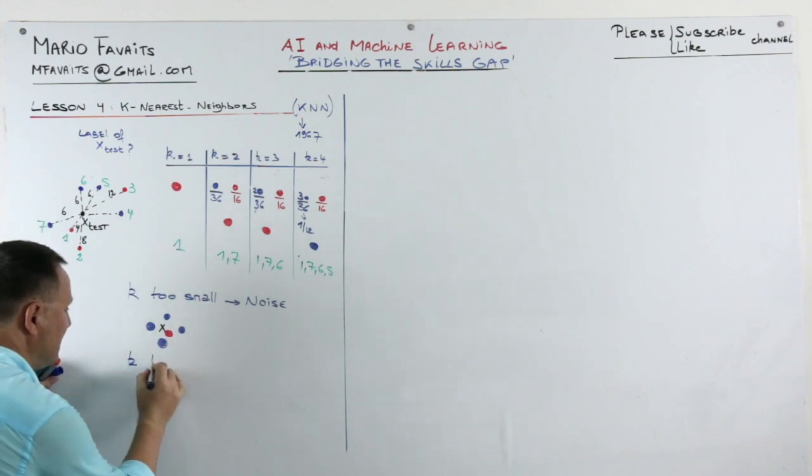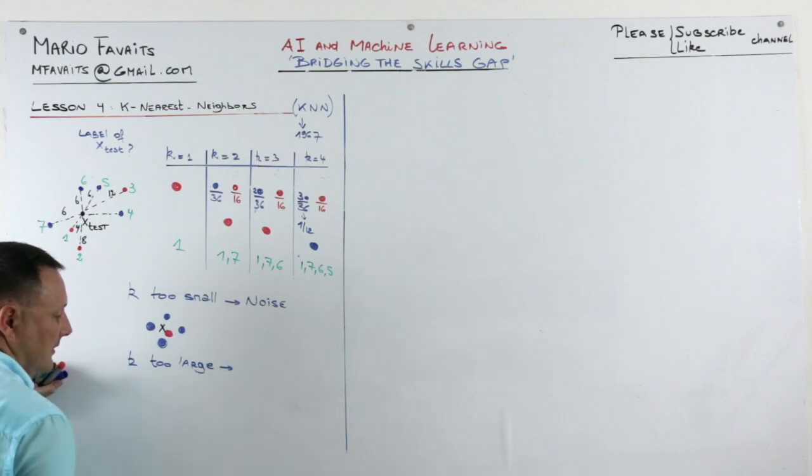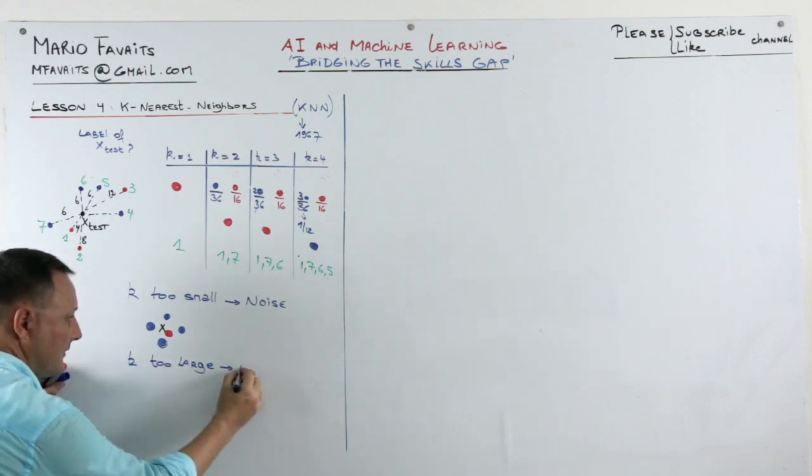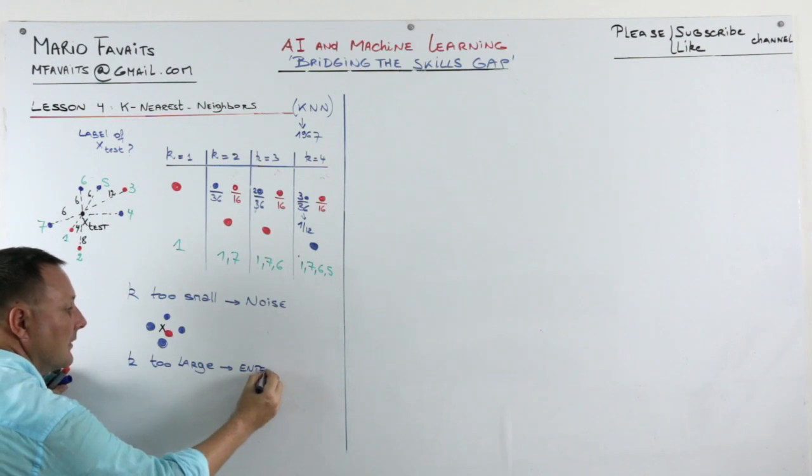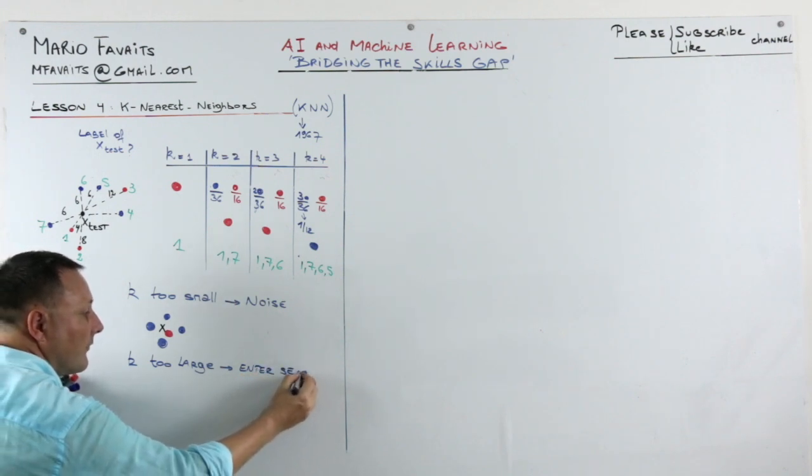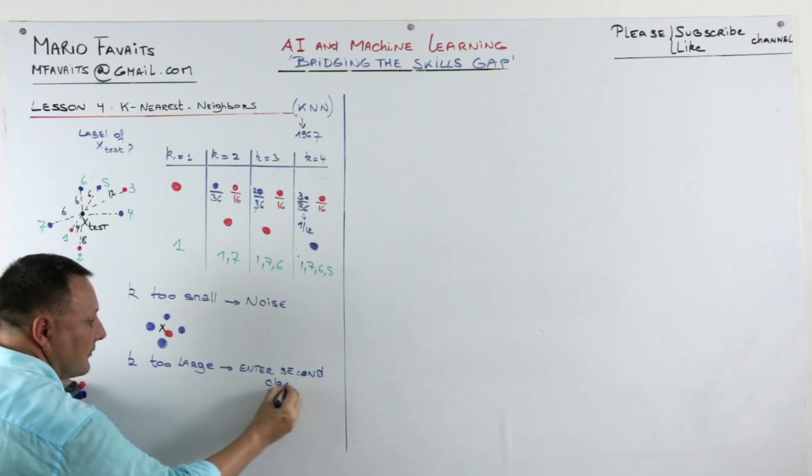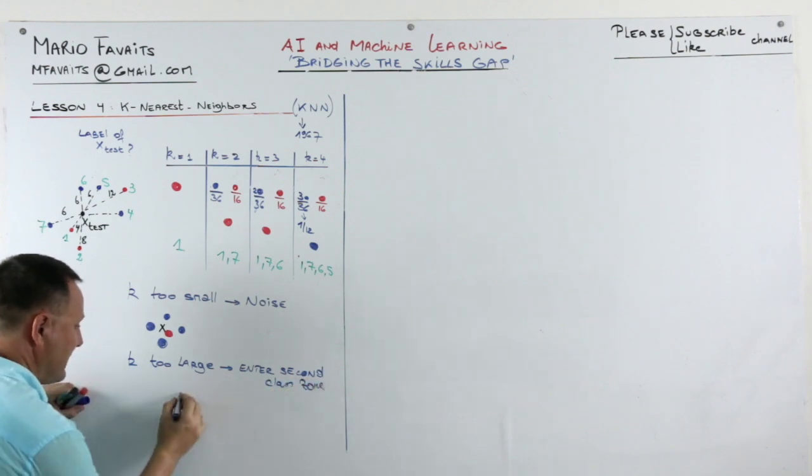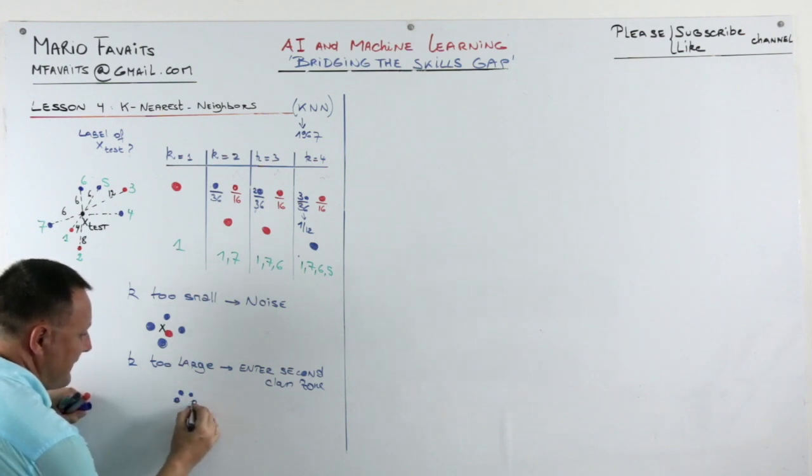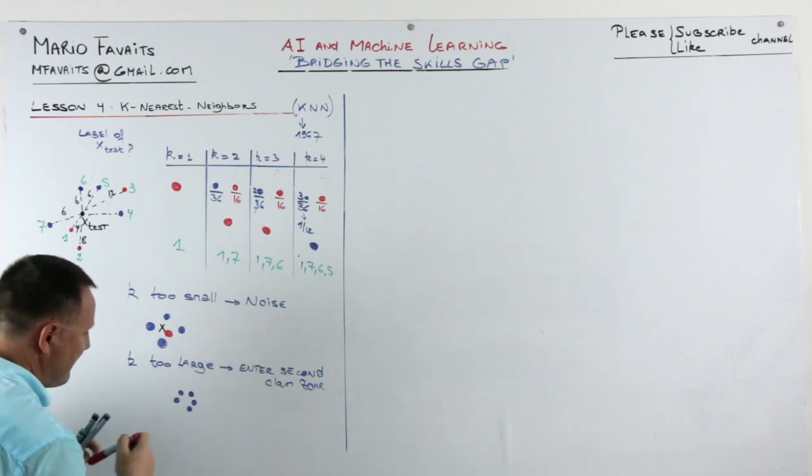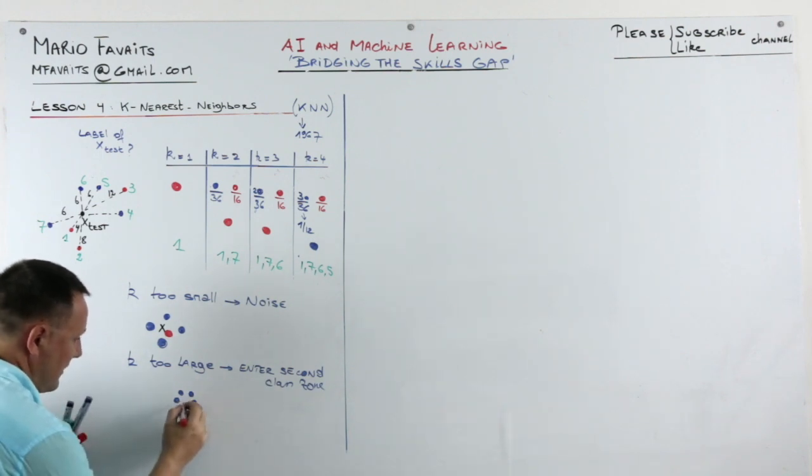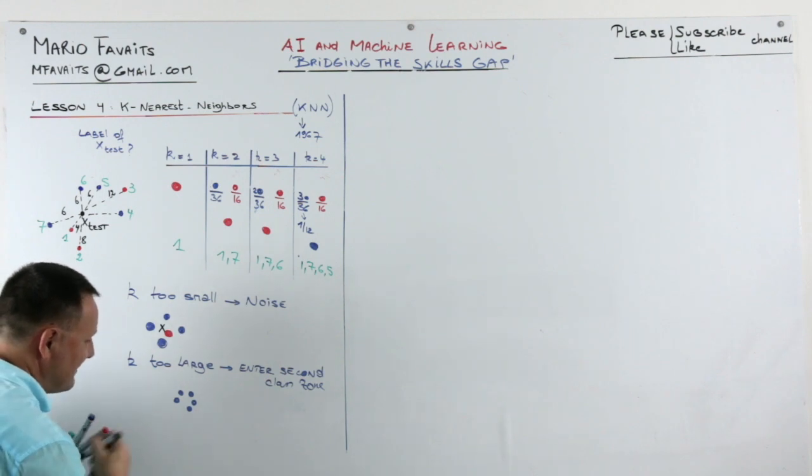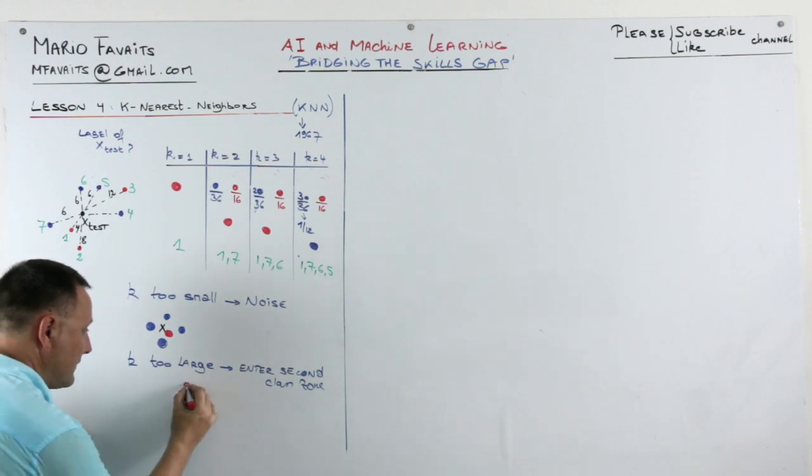When k is too large, you will enter second class zone. So for example, if these are your five blue dots and you have a test point in the middle here, the black test point, and around this it's all red.